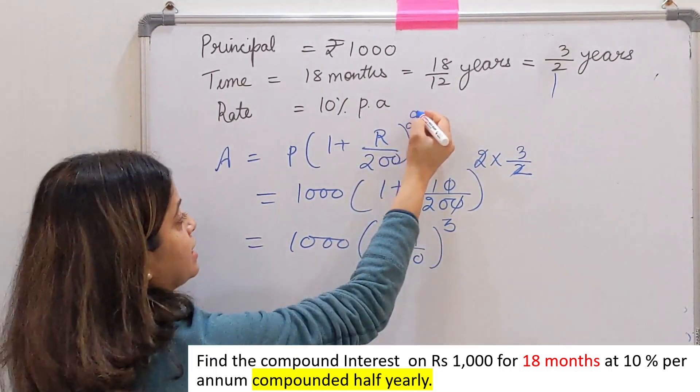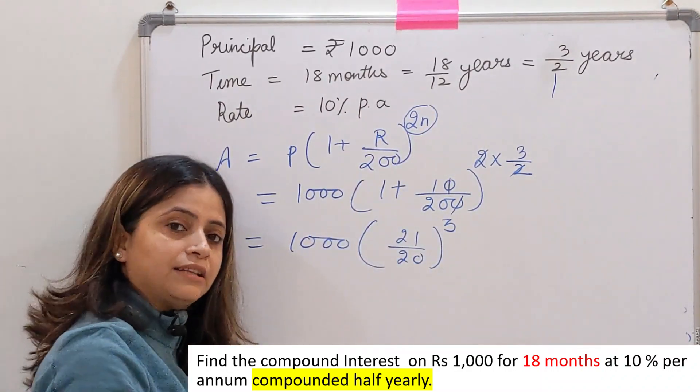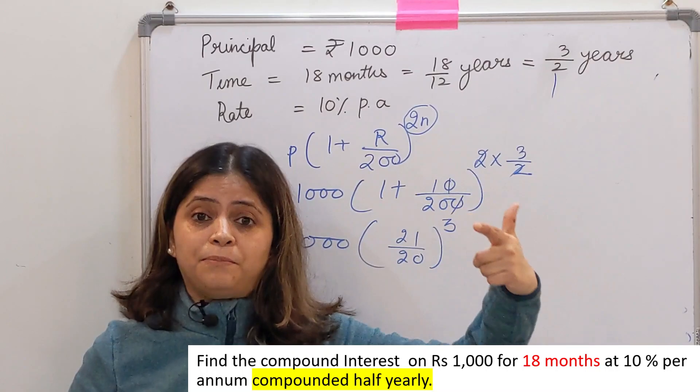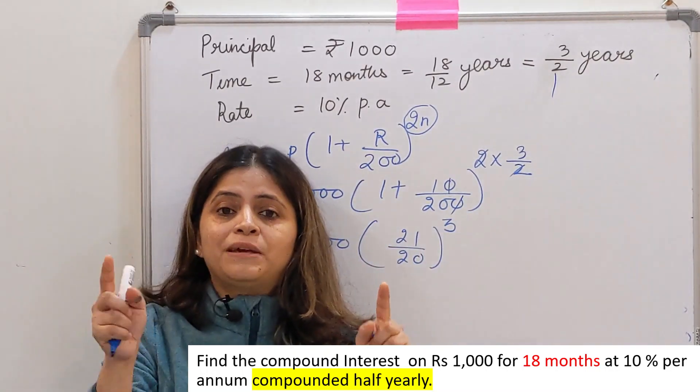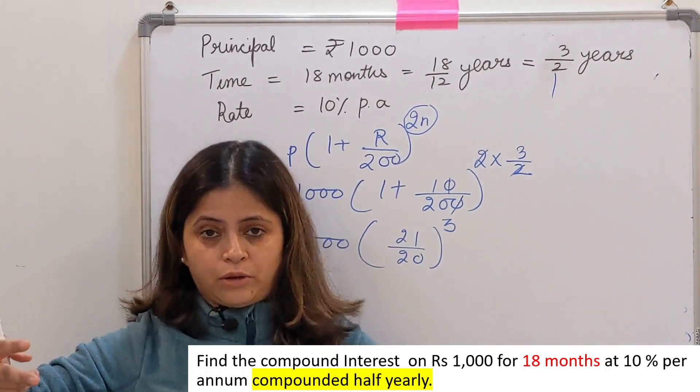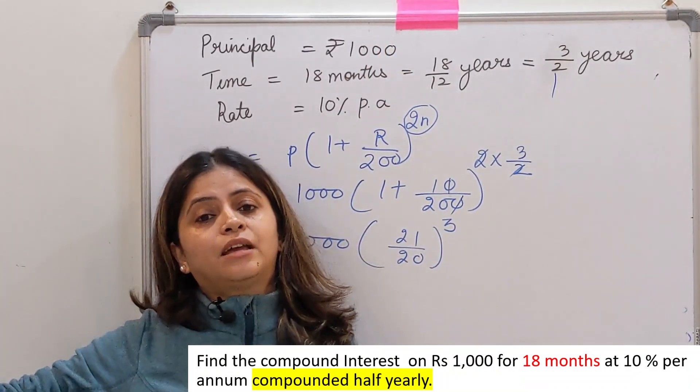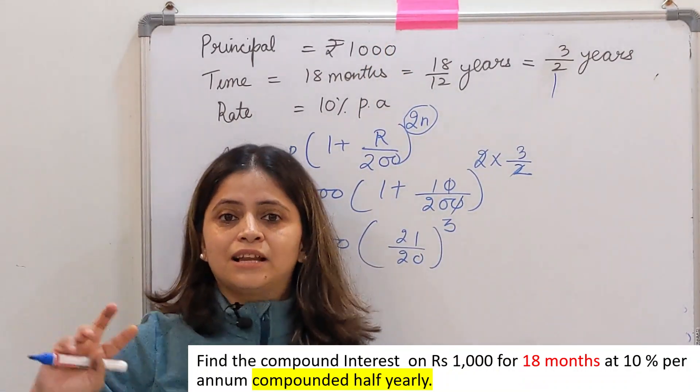Right, 3 आ गया. अच्छा, यह 2N क्या होता है? मैंने n तो आपने बताया यह. यह 2N क्या है? 2N is the total conversion period. One conversion period का मतलब होता है interest कब calculate हो रहा है. पैसे डाले 1000. कितने half year के लिए? हर आधे साल के बाद, six months के बाद interest calculate हो रहा है. तो total आपका तीन बार interest calculate होगा जब तक आपने money withdraw नहीं किया तब तक, right?